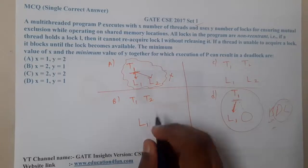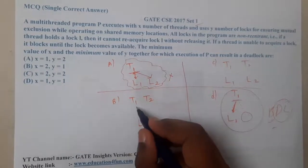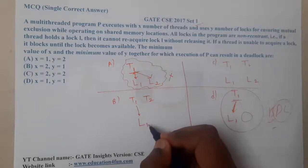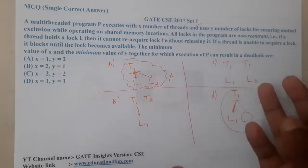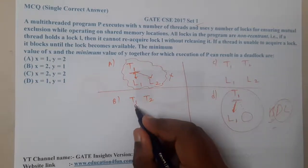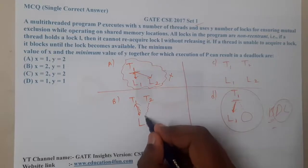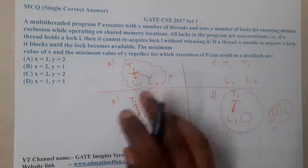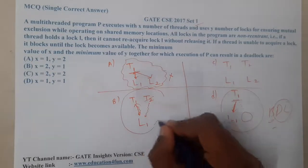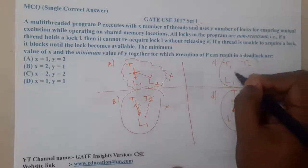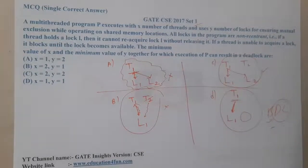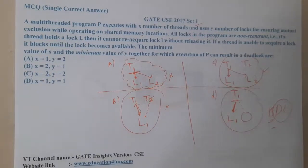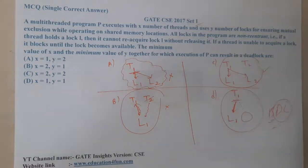For Option B with two threads: if T1 is holding L1 and suddenly requires one more lock, it releases L1, which T2 might then use and finish execution — so there is no deadlock issue. Similarly with two threads, once execution is done and a new lock is needed, the lock becomes available. So Option D, with one thread and one lock, seems the most likely candidate for deadlock.